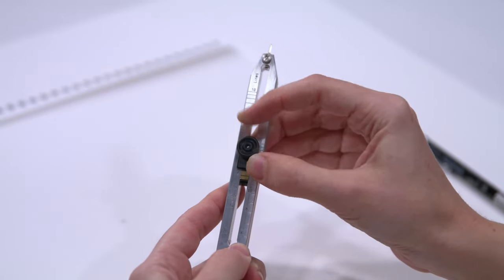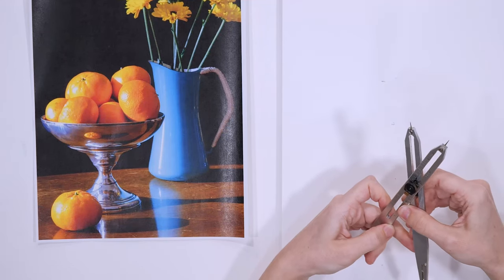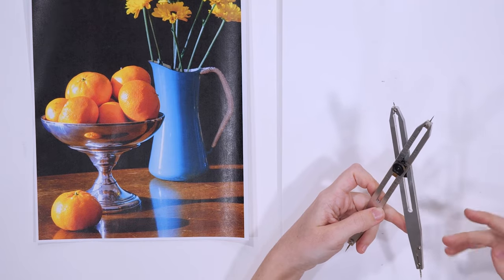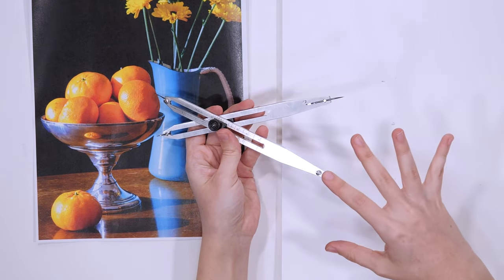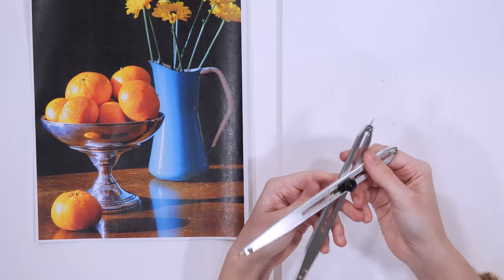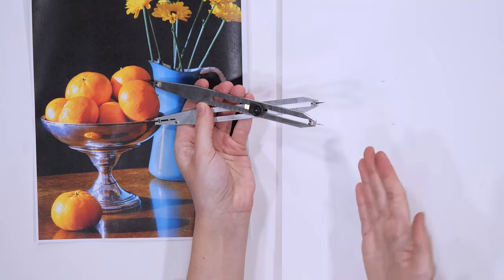So if I take it up to the number 2 right here, and tighten it back up again, I can then open this up and I will have a 1 to 2 ratio that I can use to either scale up my reference image, or if I flip this around and use the other side, and then get my proportion taken again, I can scale down my image.